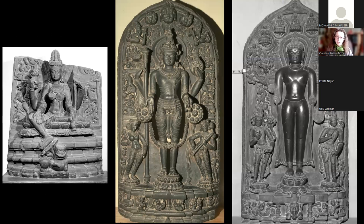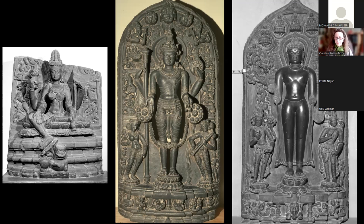This throne will be represented up to the end of the 12th century in Eastern India. You have it here on a Buddha image, a Vishnu, a Devi — a succession of elements. What I want to show you is how we came to this result: what are the origins of these four elements and how they combined.